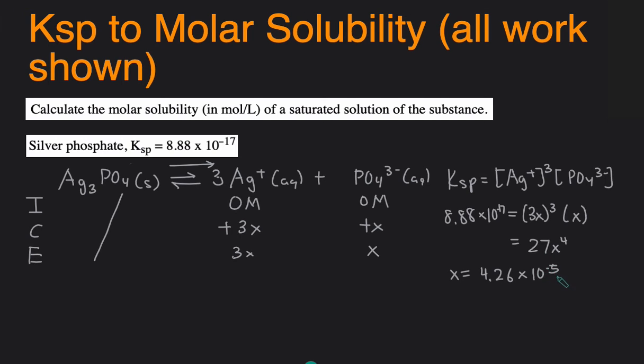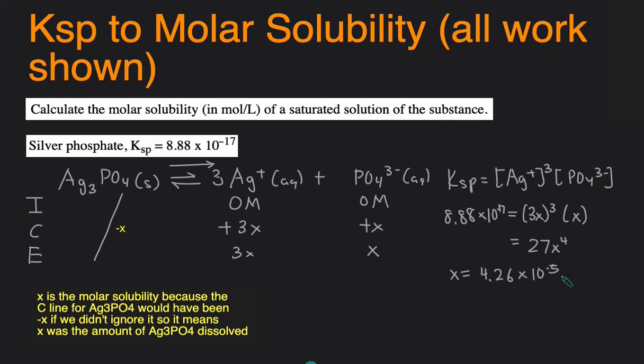And X is your molar solubility so then the units will be moles per liter. So the way to interpret this is that 4.26 times 10 to the negative 5 moles of silver phosphate will dissolve per liter of solution.